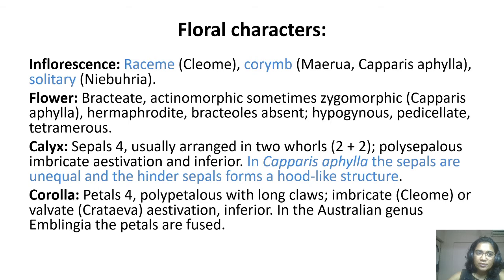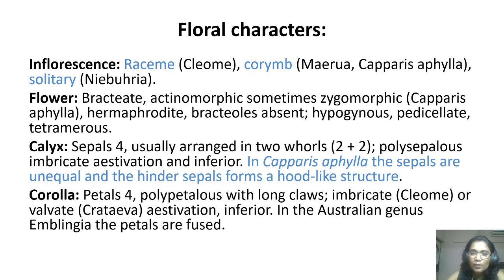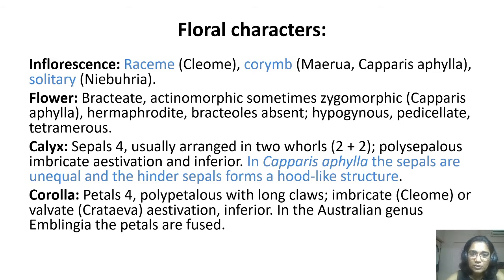Now for floral characters, we divide the morphological characters into vegetative characters — covering leaves, root, and stem — and floral characters, covering inflorescence, flower, calyx, and corolla. Here, inflorescence is raceme, corymb in case of Merremia, Capparis aphylla, then solitary in case of Neburea.